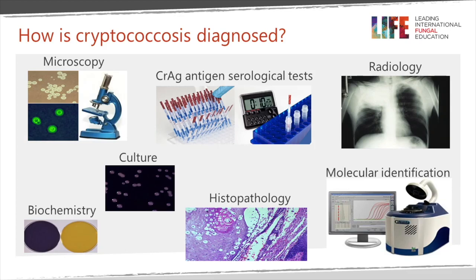Sometimes a biopsy is done and cryptococcal organisms are visible, best visualized with specific fungal stains such as Gomori methenamine silver or PAS stains, but they are occasionally visible on H&E essentially as an organism with a halo around it because the capsule doesn't stain. Another means of identifying the organism is through molecular or MALDI-TOF identification systems, which we won't go into in detail in this webinar.